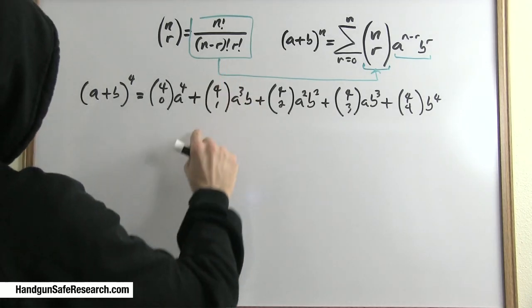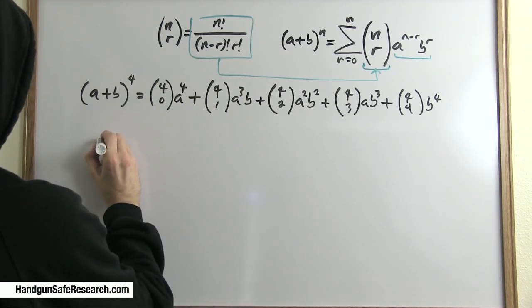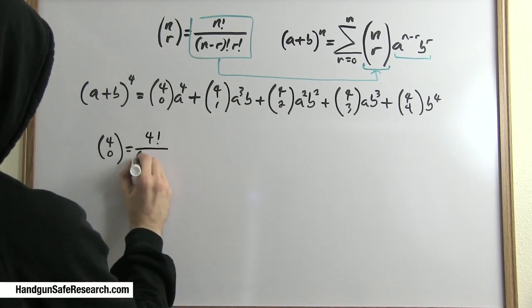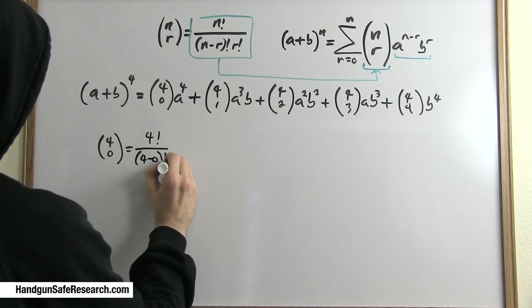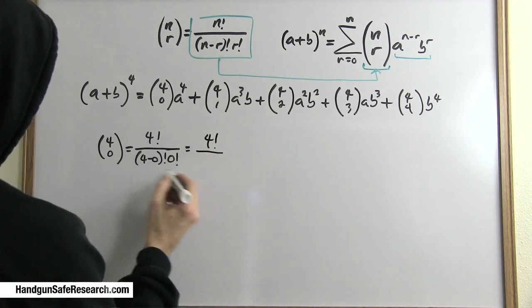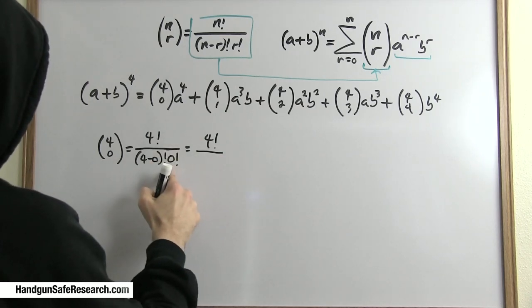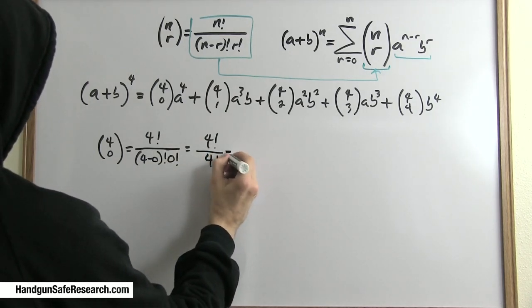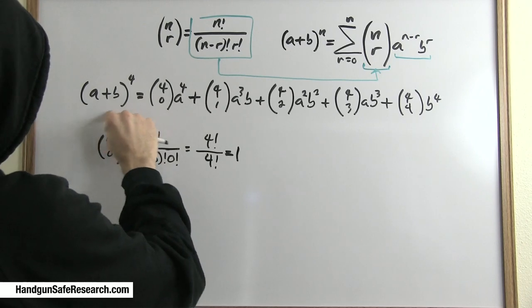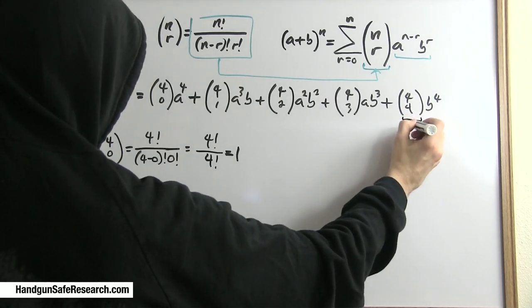So I've got 4 choose 0 times a to the fourth plus 4 choose 1 times a cubed times b plus 4 choose 2 times a squared times b squared plus 4 choose 3 times a times b cubed plus 4 choose 4 times b to the fourth. And I've got one, two, three, four, five terms, which is what I should get because I set this to the fourth power. Now I'm going to use this formula to calculate just a couple of coefficients. I will do 4 choose 0 first: 4 factorial over (4 minus 0) factorial times 0 factorial. 4 minus 0 is just 4, so I've got 4 factorial times 0 factorial. We've already established that equals 1. So I'm left with this, which equals 1. And this is exactly what I should get. When you multiply out these general term binomials, the coefficients for the first and last terms are always equal to 1.